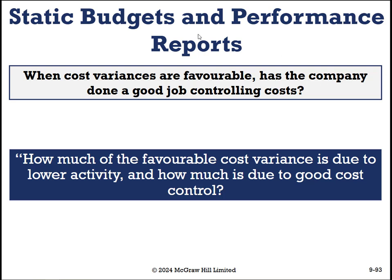A static budget cannot answer this question: when cost variances are favorable, has the company done a good job controlling costs? The better question is: how much of the favorable cost variance is due to lower activity, and how much is due to good cost control? Your costs may be down simply because you sold way less than expected. When we use flexible budgeting, we can actually answer how much was in managers' control.